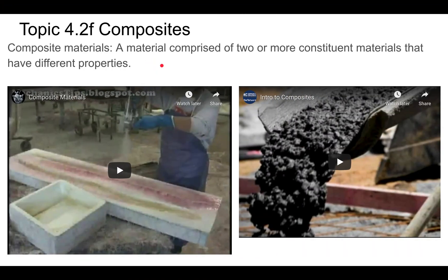Our next topic is composites. Composite materials are materials comprised of two or more materials that are basically glued together somehow. The materials usually have different properties, and that gives them some interesting properties. Here's an example of some composite materials — go ahead and watch this movie. It also shows some of the molding process that goes on with composite materials.